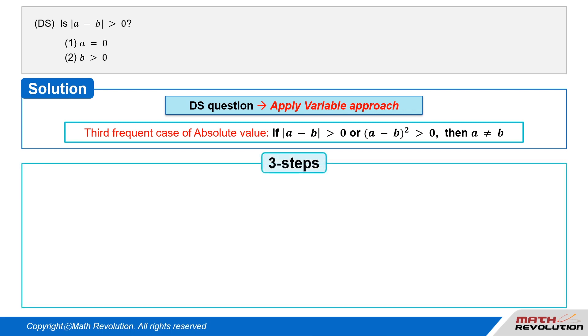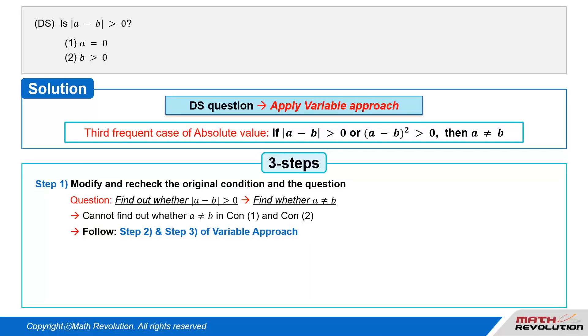Let's apply the three steps suggested previously. Follow the first step of the variable approach by modifying and rechecking the original condition and the question. We have to find out whether absolute value of whole of a minus b is greater than zero, and it can be modified to find whether a is not equal to b. Because we cannot find out whether a is not equal to b in conditions 1 and 2, we should follow the second and third steps of the variable approach.